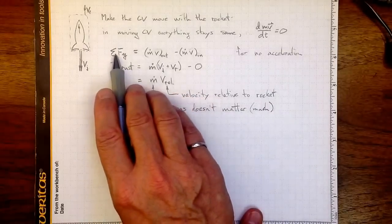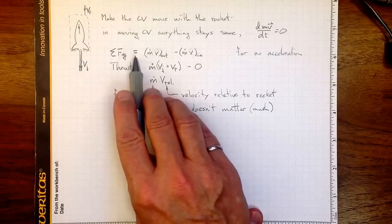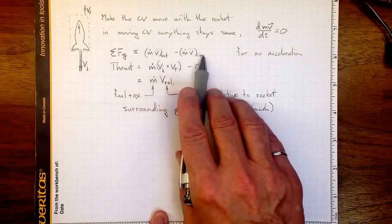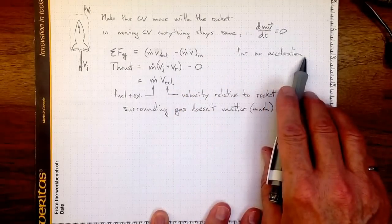Now, the sum of the forces in the y direction in that control volume have to be equal to ṁ_out v_out minus ṁ_in v_in, if we have no acceleration.